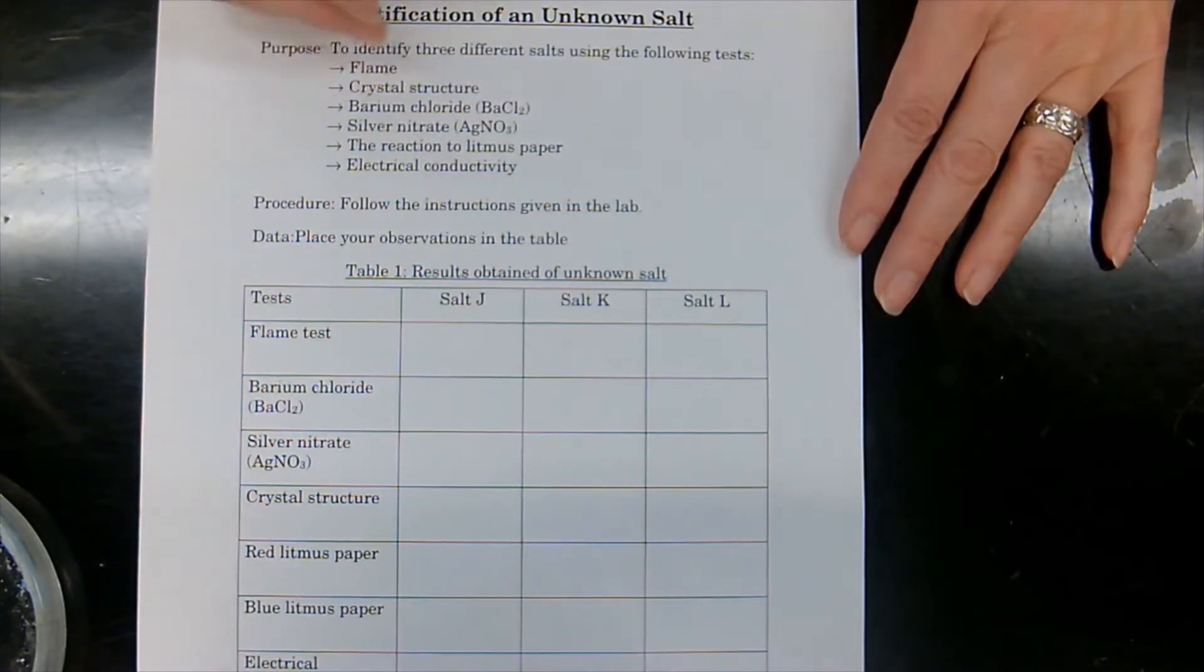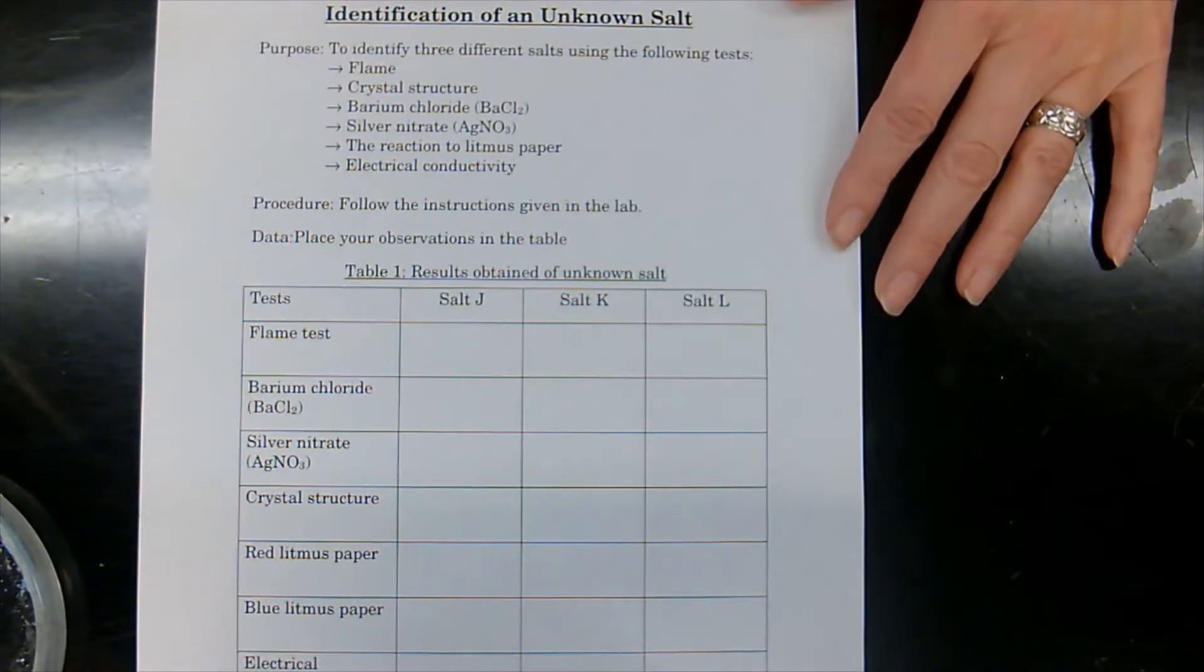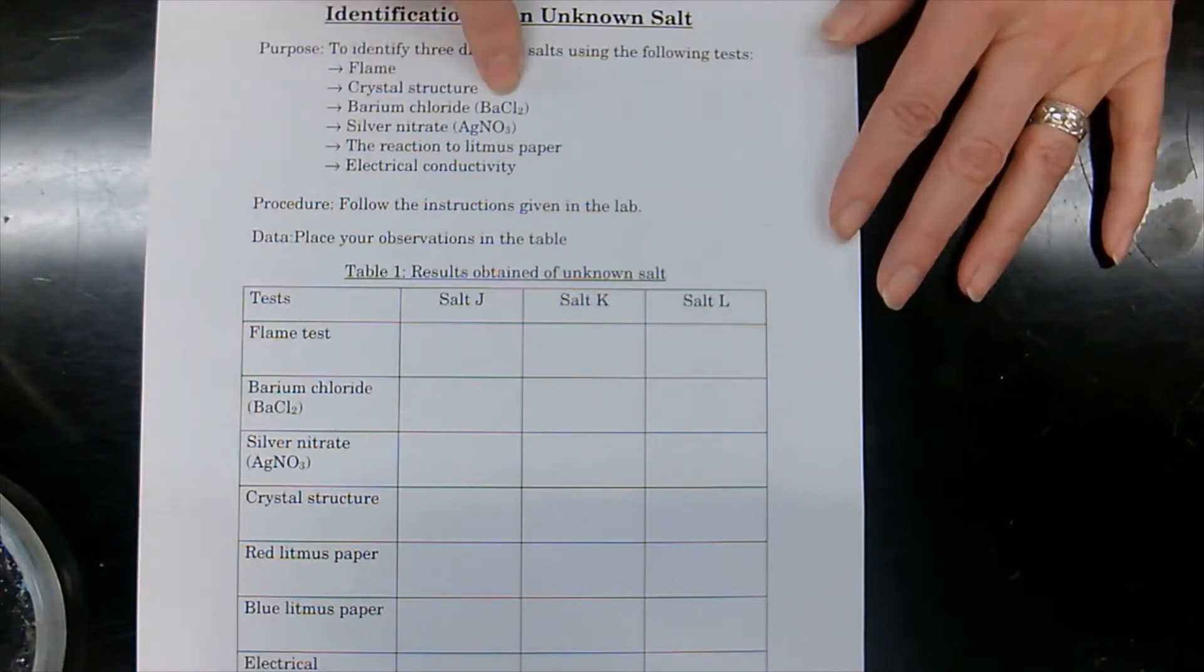We're going to try to figure out which ones they are by doing all of these tests. So the tests we're going to be doing, we're going to be doing a flame test, and we're going to be looking at them underneath the microscope to see their crystal structure. We're going to be testing with barium chloride.